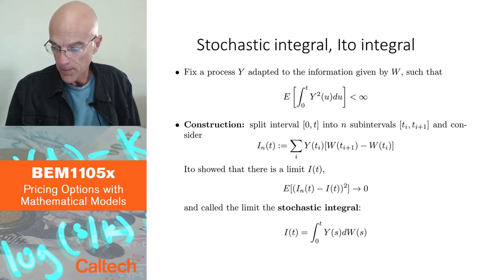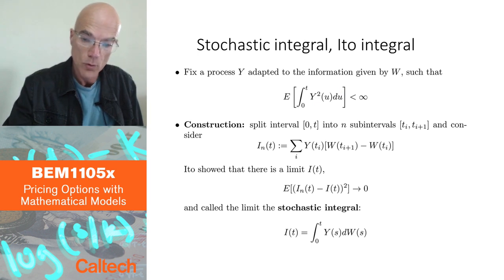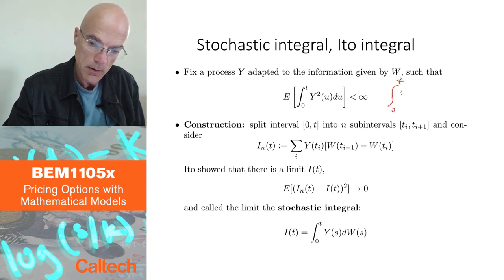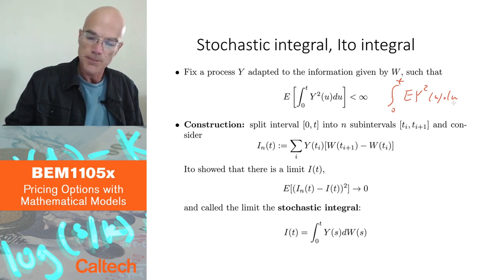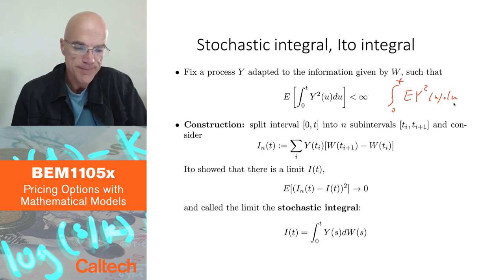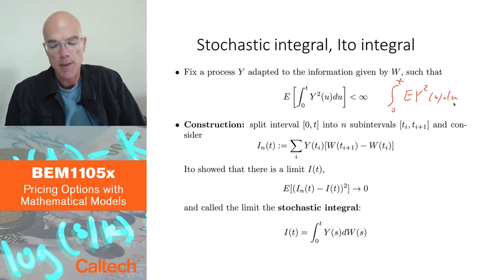Expected value of integral of Y squared U dU, this is a standard integral, is finite. If you move, in principle, you could move this expectation inside. So it means that the integral of squared moments, E Y squared of U dU, is finite. And this, you add all the squared moments across time. So let's assume that.